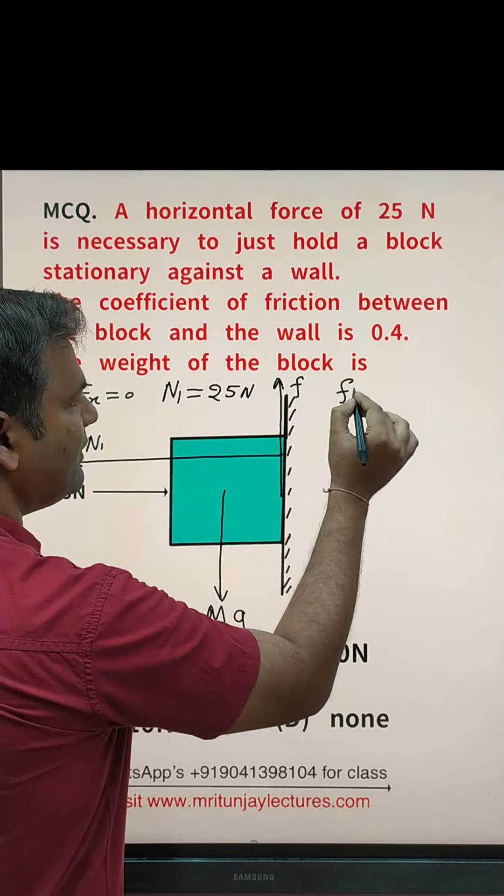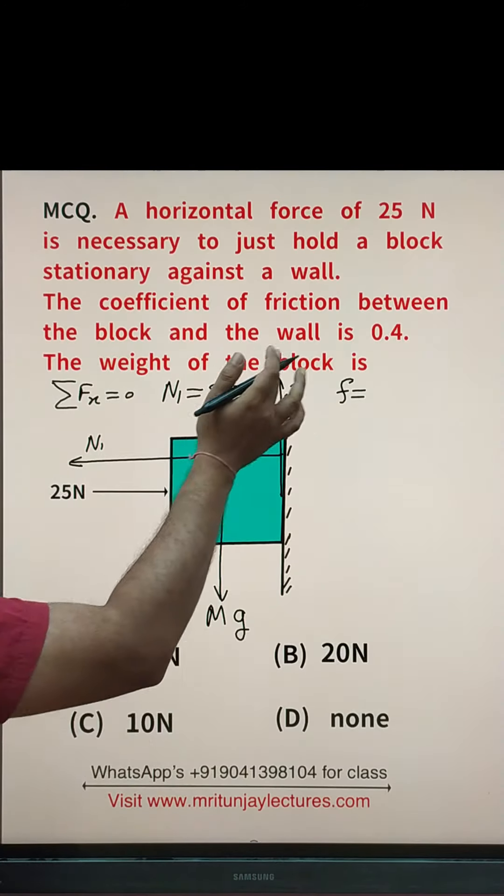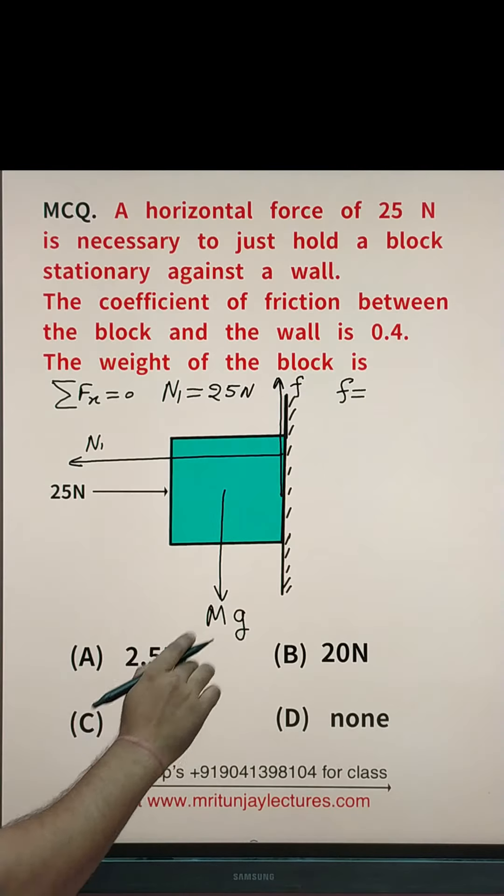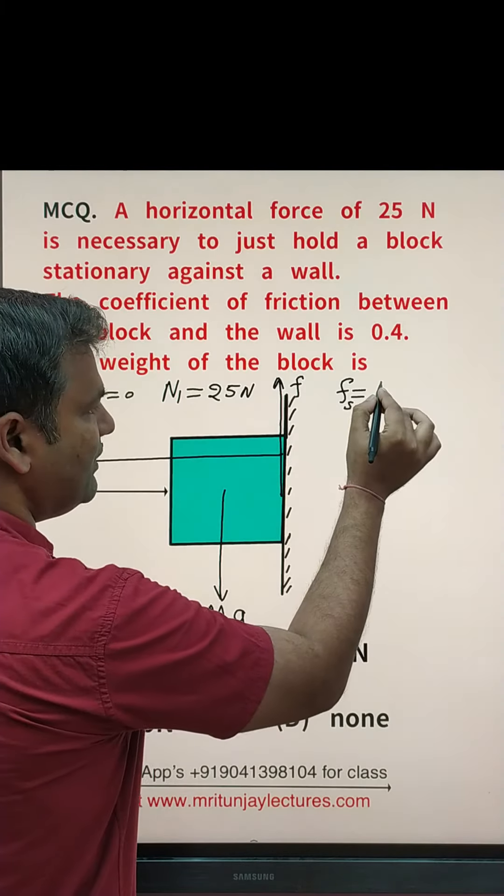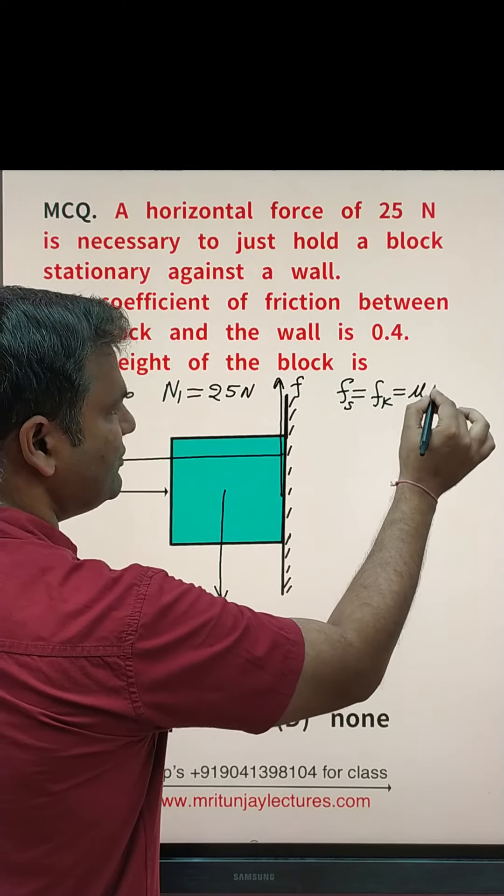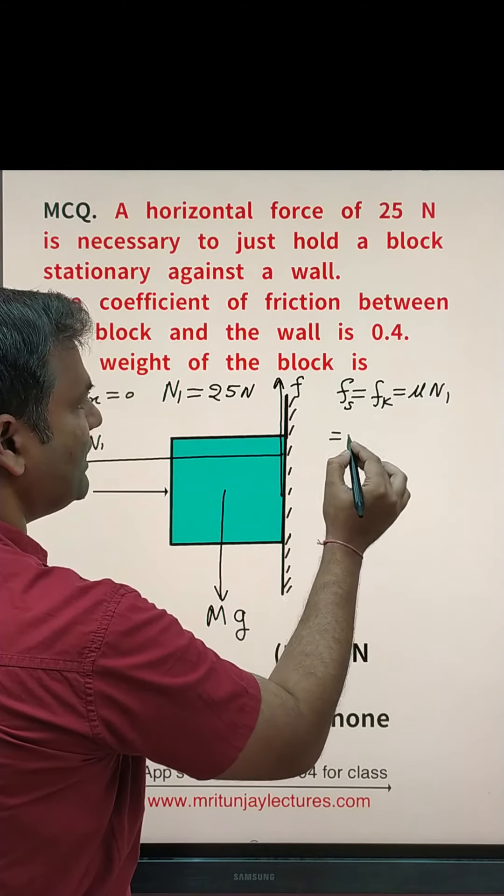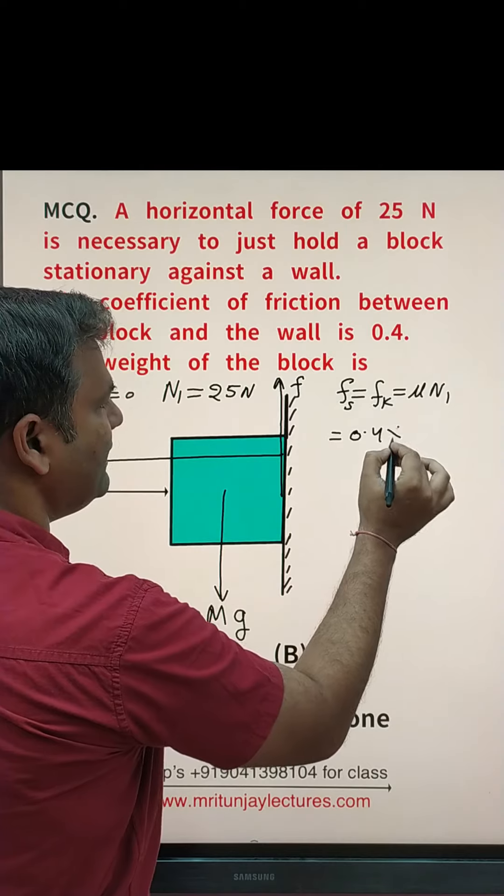So, what about F? F here, 0.4 given. Means, mu s and mu k are same. So, mu into N1. What about mu? That is 0.4 and 25.